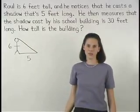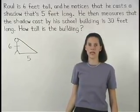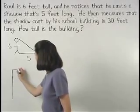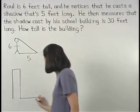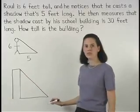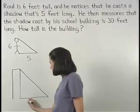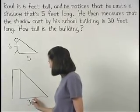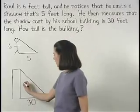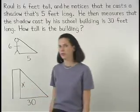Next, let's draw a picture of the school building and its shadow. We know that the shadow cast by the school building is 30 feet long and we're asked how tall the building is, so we can use X to represent the height of the building.